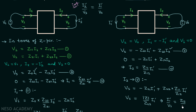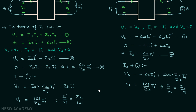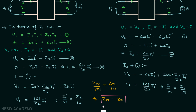For the two-port network to be reciprocal, Z12 over the determinant should be equal to Z21 over the determinant, which means parameter Z12 should be equal to parameter Z21. Remember this important condition. Using this condition we will find out the condition for reciprocity in terms of Y parameters, H parameters, G parameters, and ABCD parameters in the next lecture.